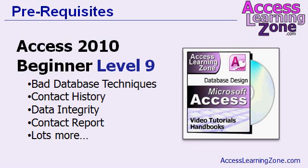This class follows Microsoft Access 2010 Beginner Level 9. I consider Beginner Level 9 to be a prerequisite for today's class, because in my Beginner Series I focused on non-relational database techniques. The database that we built in the Beginner Series did not relate multiple tables together like you should. In Beginner Level 9, I showed you bad database techniques — how to set up the contact management system wrong using flat file tables.